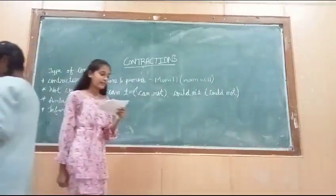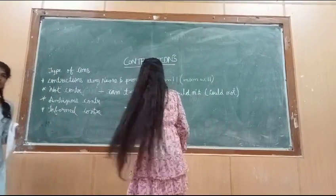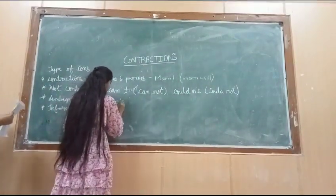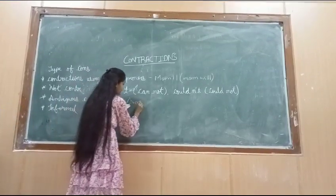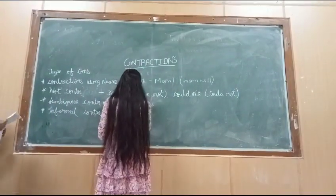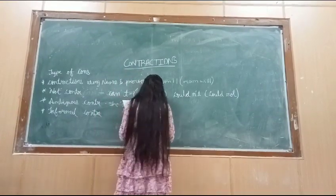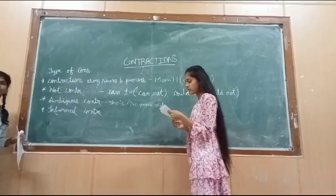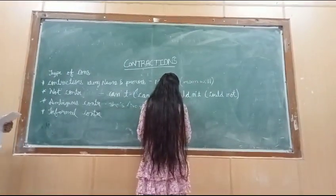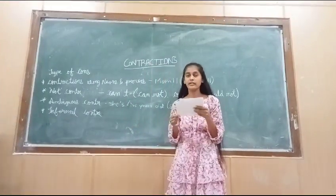Let's know about ambitious contractions. Ambitious contractions usually end with the letters S and apostrophe. Here's an example: "She's fires." We use contractions with "she's," which is the contracted form of "she is." Our next example is "she's got $50 in her wallet."